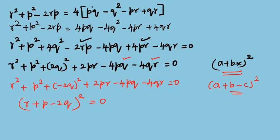Here, the terms automatically cancel. Taking square root on both sides, r + p - 2q = 0.